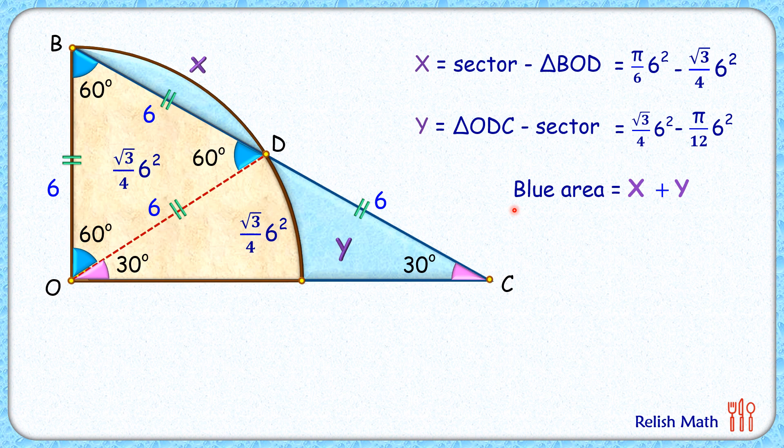Now the blue area is X plus Y. When we add these regions, X plus Y, we find this area of the triangle is getting cancelled. So the blue region is (π/6) × 6² minus (π/12) × 6², which on simplifying gives us the area as 3π square centimeters. And that's our answer.